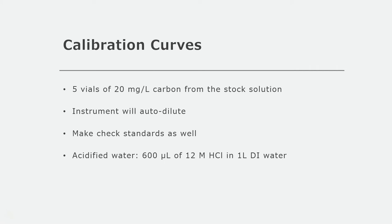Another really useful recipe is the one for acidified water, since you'll be using it as your dilution water. The recipe for this is adding 600 microliters of concentrated hydrochloric acid — that's 12 molar hydrochloric acid — in 1 liter of DI water.